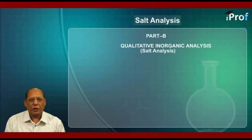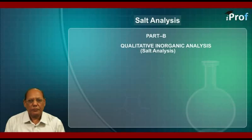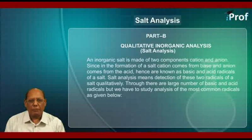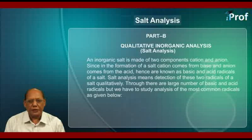We shall now discuss part B of the 6th unit that deals with qualitative inorganic analysis, very commonly known as salt analysis. An inorganic salt is made of two components: cation and anion. Since in the formation of a salt, cation comes from base and anion comes from the acid. Hence, these are known as basic and acid radicals of a salt. Salt analysis means detection of these two radicals of a salt qualitatively.